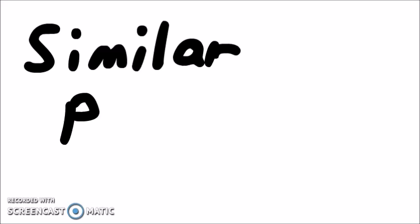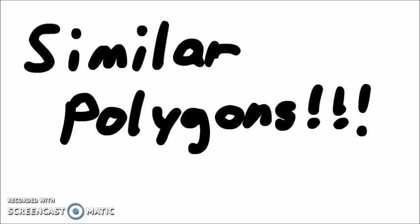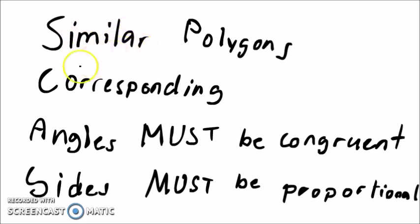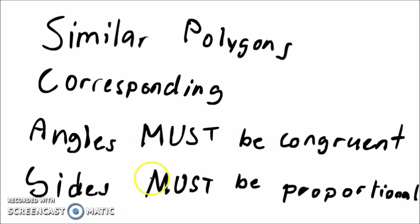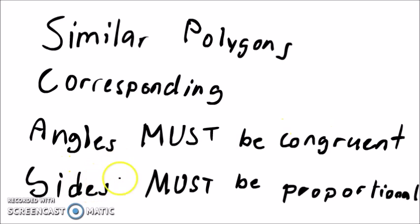Hello! Today I'll be talking about similar polygons. To know whether or not two polygons are similar is to know if their corresponding angles are congruent and if all their corresponding sides are proportional. So all their angles must be the same and all of their corresponding sides must be proportional.